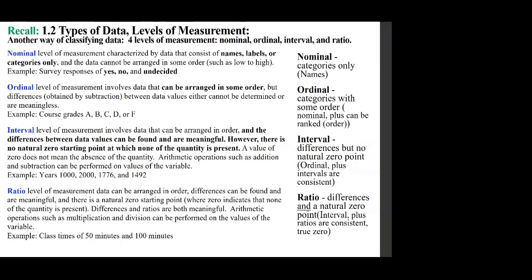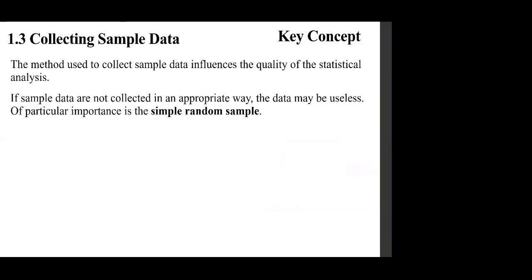Nominal is just a category. Ordinal has some sort of order. For interval, if you were to do division it makes no sense. Whereas in the case of ratio, even division makes sense, zero does exist, and it has meaning.